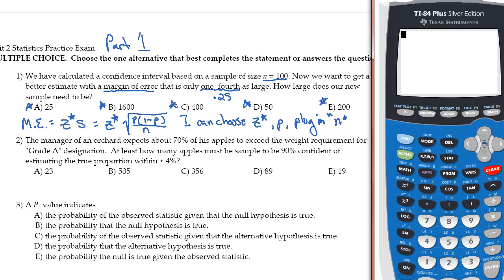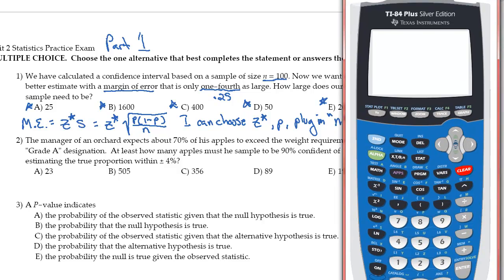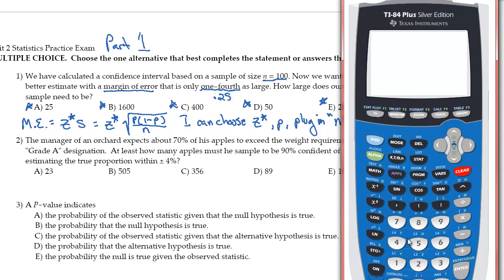I'm going to switch over to the calculator. Here's my handy-dandy calculator. I'm going to go ahead and choose 2 as my z star, and I'm going to take the square root of, and I'm just going to choose something easy, 0.5. The reason I'm going to do that is because I'm going to multiply it by 0.5. Then divide that by n, which is 100. I hit enter and I get 0.1.